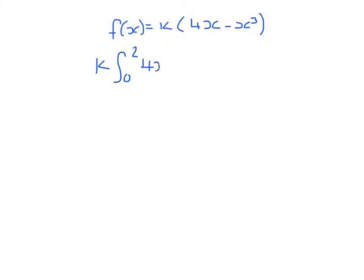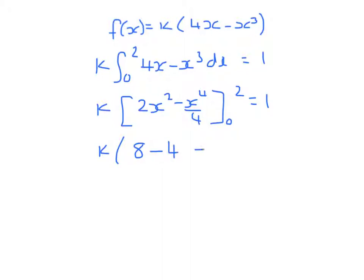So the integral 4x minus x cubed with respect to x from 0 to 2 must be 1. So k times 2x squared minus x to the 4 over 4 from 0 to 2 must be 1. So k upon 2 times 4, which is 8, minus 16 over 4, which is 4, take away 0 has to be 1. 4k is 1, k is 1 quarter.